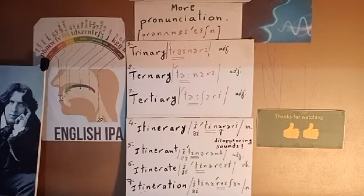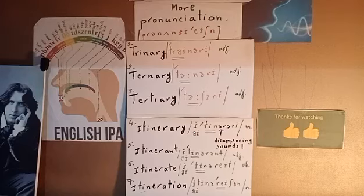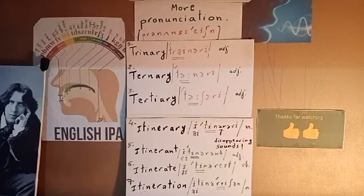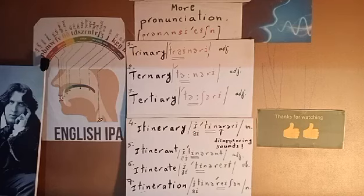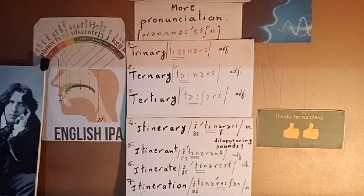Let me begin with the first three words. They are: trinary, ternary, and tertiary. The first word is trinary. It means consisting of three parts, or proceeding by three parts. This word contains three syllables and three vowel sounds. The first vowel sound should be stressed. We say trinary. It's an adjective.